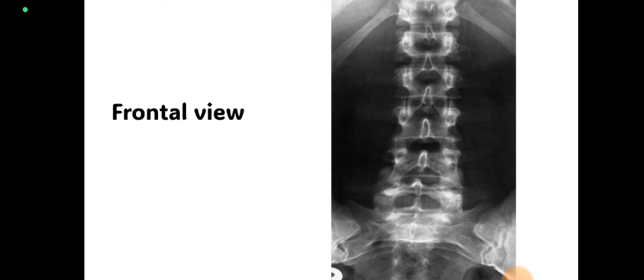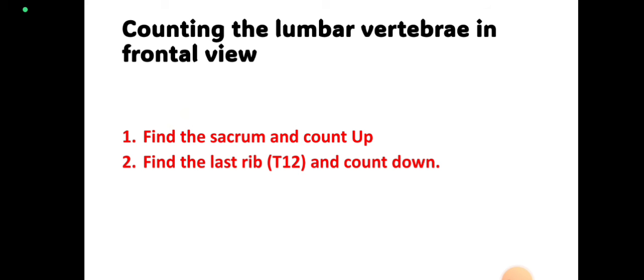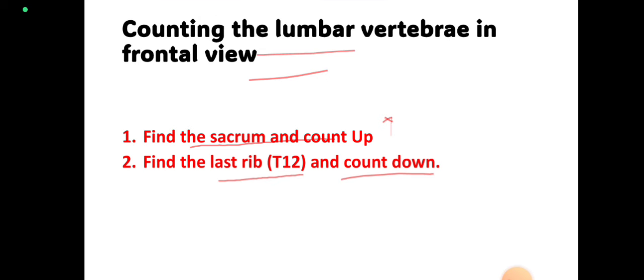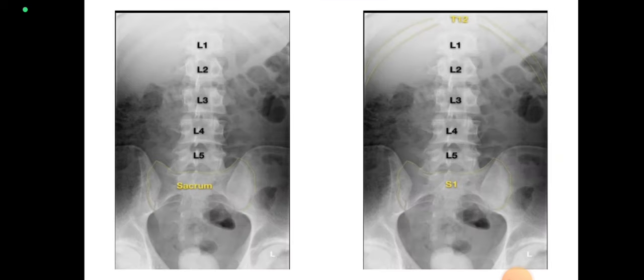The frontal view means we are projecting the x-ray from the anterior side, so x-rays travel from anterior to posterior direction, and we get a frontal view x-ray. During interpretation of the frontal view, we have to count the lumbar vertebrae — this is important. We can use two methods: first, find the sacrum and count up; second, find the 12th rib and count down.